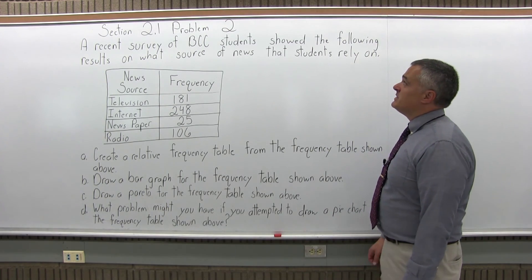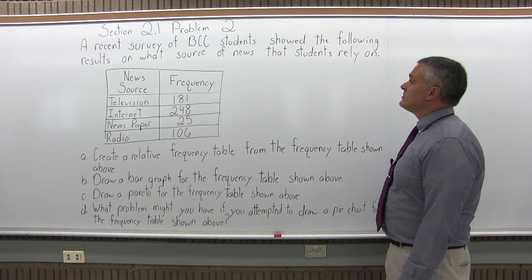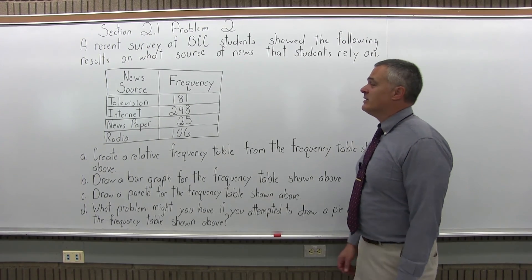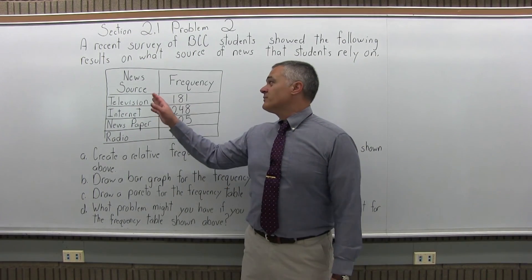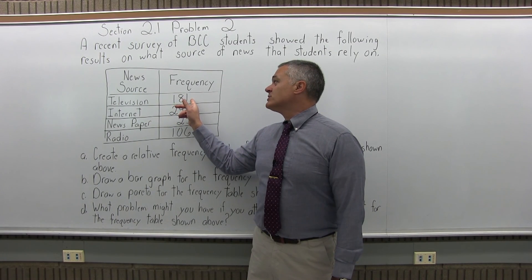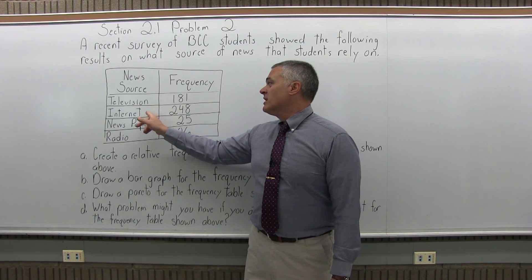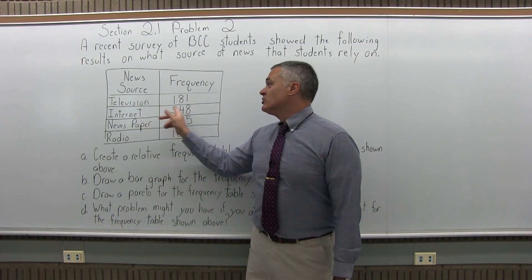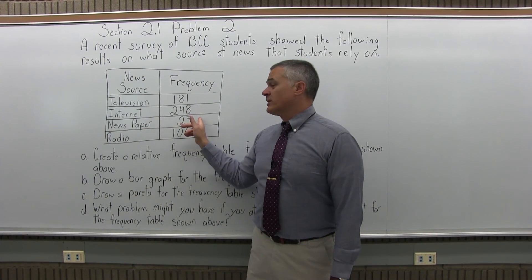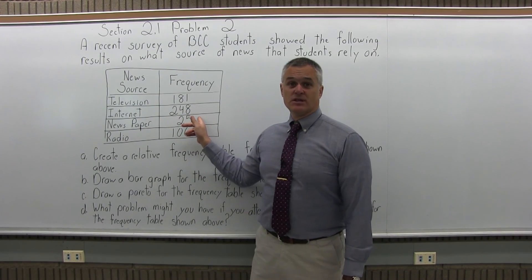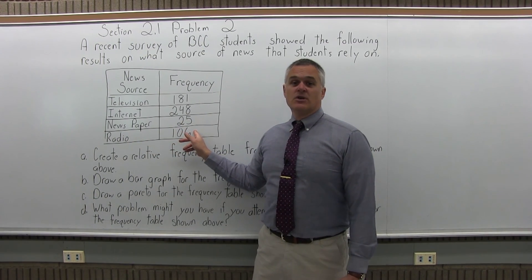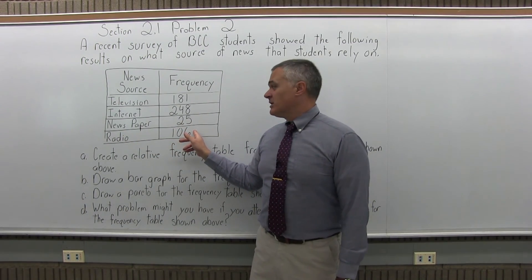A recent survey of BCC students showed the following results on what source of news students rely on. For television, 181 students got news from television. The internet, 248 students got news from the internet. A newspaper, only 25 students got their news from the newspaper. And on the radio, 106 students got their news from the radio.